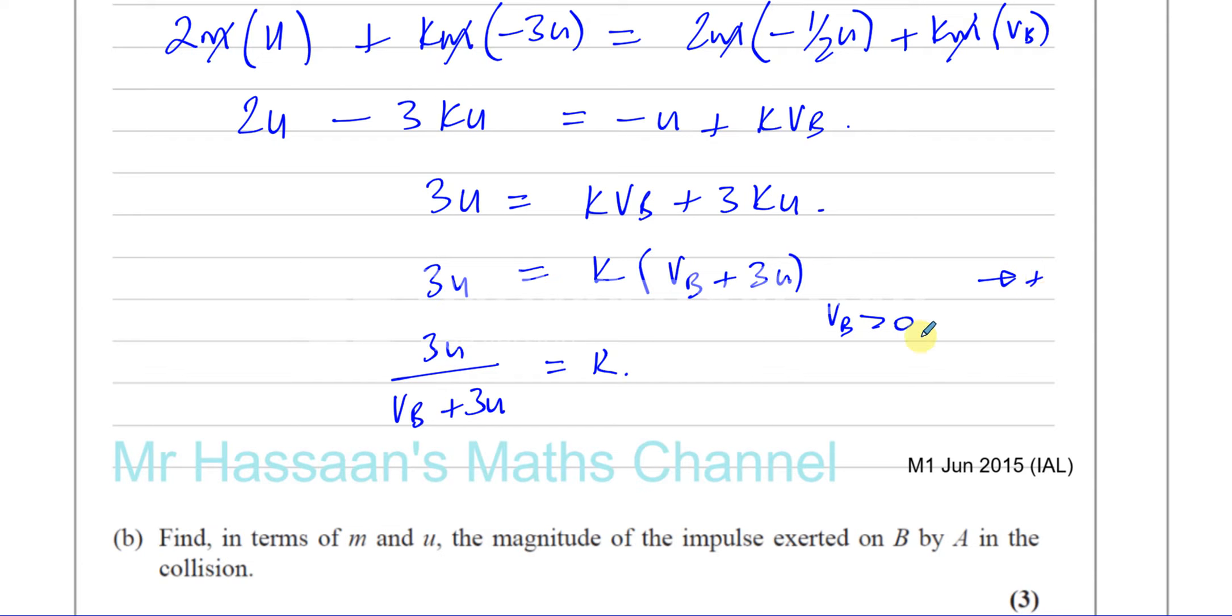And if that's a positive value, that means that the numerator, which is 3U, is going to be less than VB plus 3U.